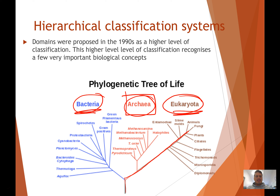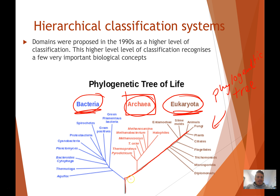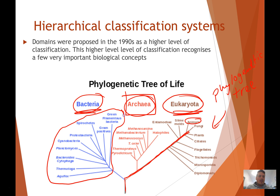We can actually follow classification systems using this thing called a phylogenetic tree, and find different interesting things. For example, all the living animals in the world fall into just this little branch of the phylogenetic tree. On the other hand, if you think of all those microscopic bacteria on your hand right now, they all fall inside this huge part of the phylogenetic tree.